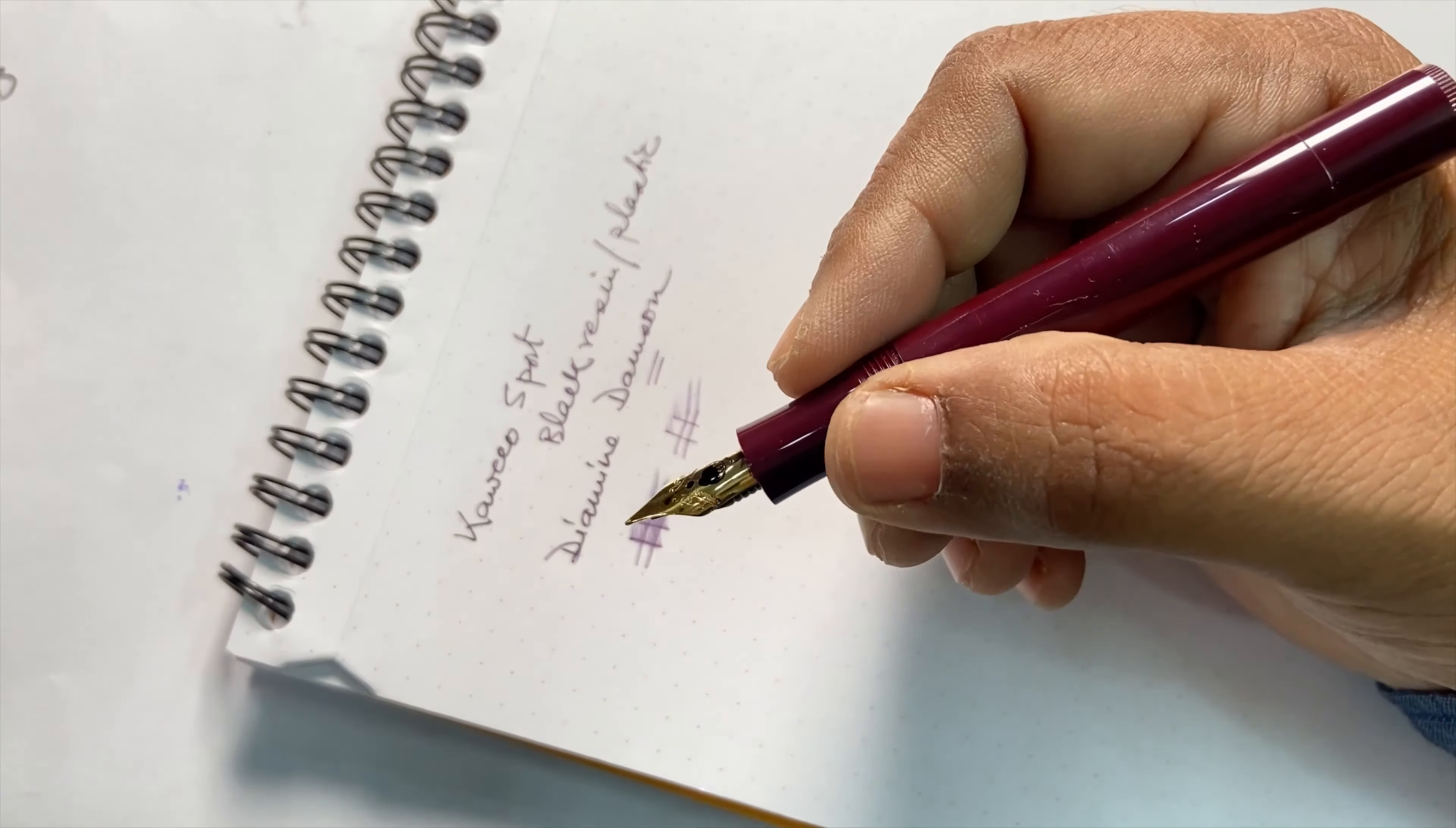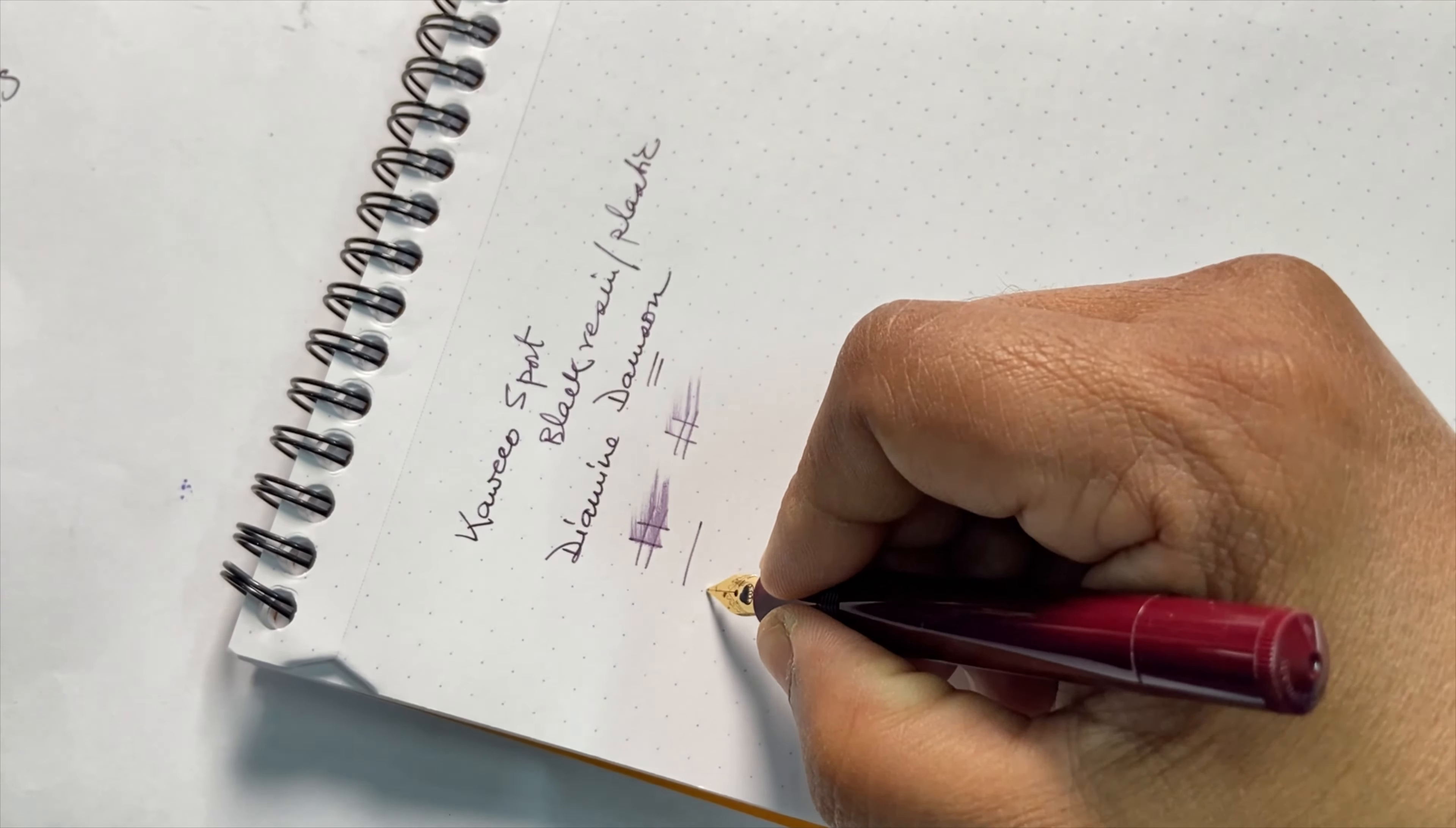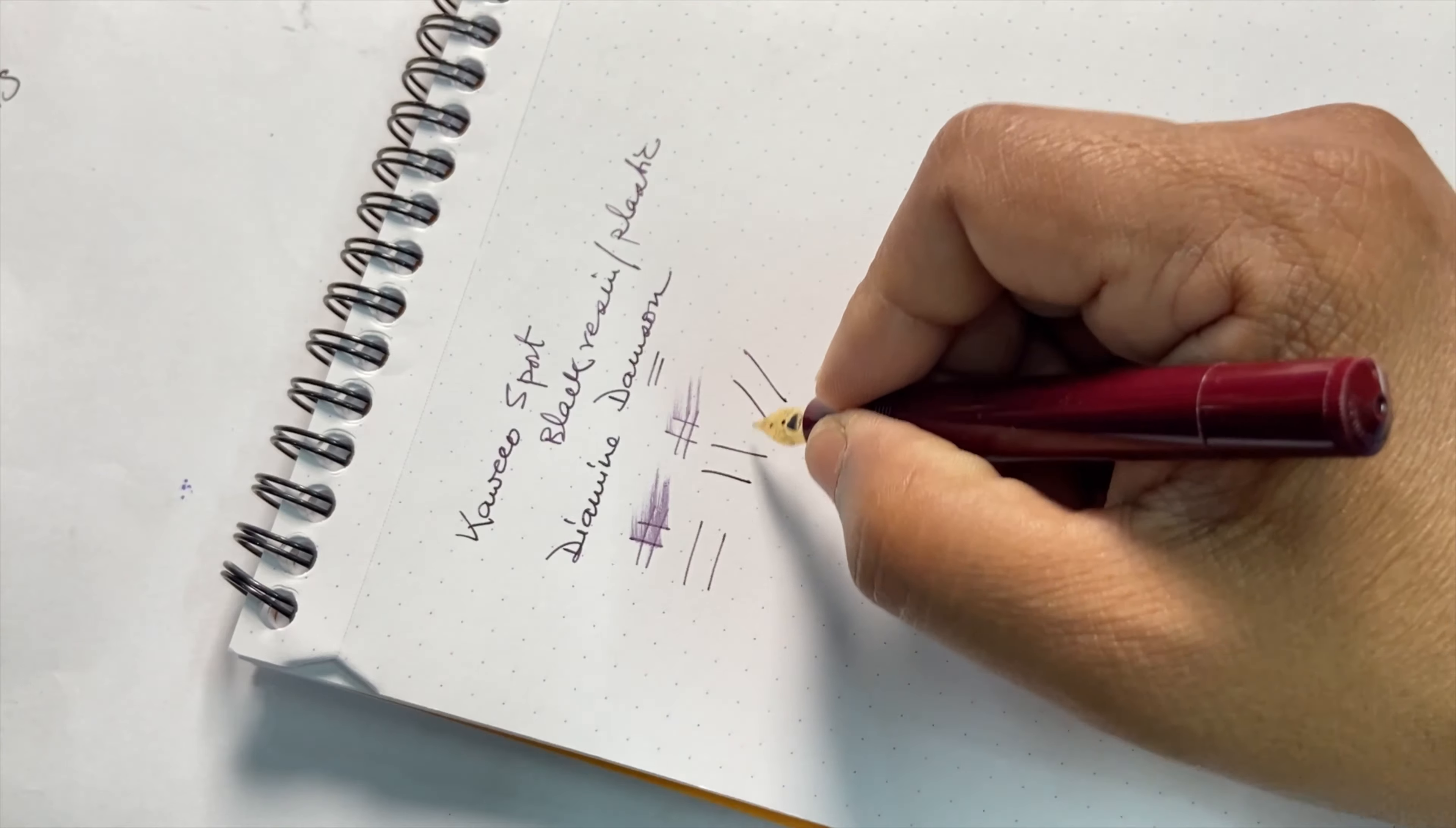And with regard to classic Kaweco Sport series pens, the side strokes and the upstrokes are comparatively thinner than the downstrokes or the standard strokes, as you can see. The side strokes are this, the downstrokes are this, so obviously it's a bit more wetter and thicker than the horizontal strokes.